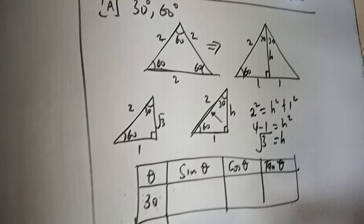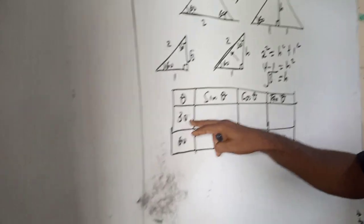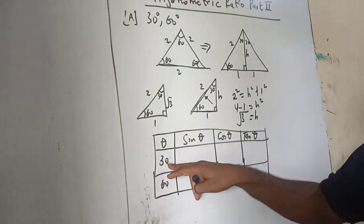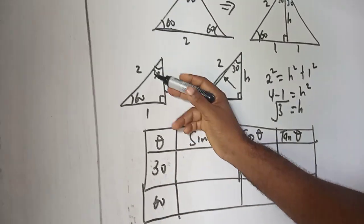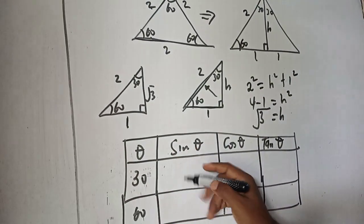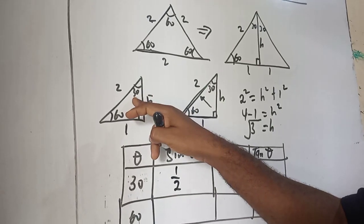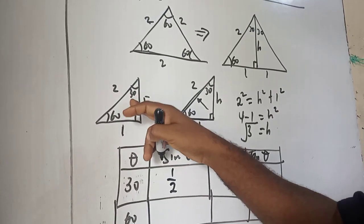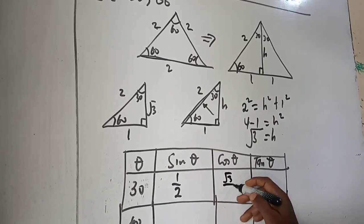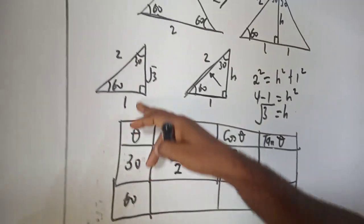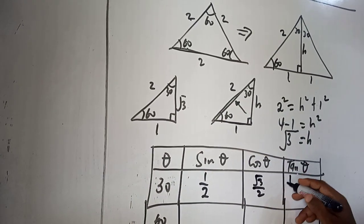Now we can fill up this table using this right angle triangle. Using SOHCAHTOA, when theta is 30 degree: sine 30 is opposite over hypotenuse — the opposite of 30 is 1, so sine 30 equals 1 over 2. Cos 30 is adjacent over hypotenuse — the adjacent is root 3 — so cos 30 equals root 3 over 2. Then tan 30 is opposite over adjacent, that's 1 over root 3.